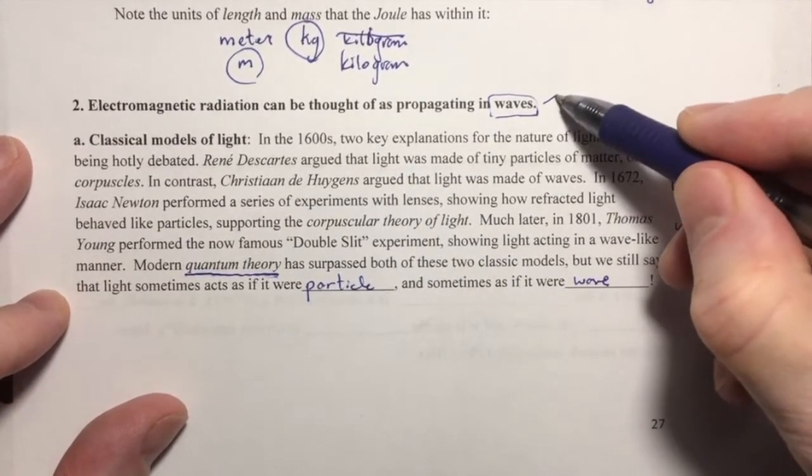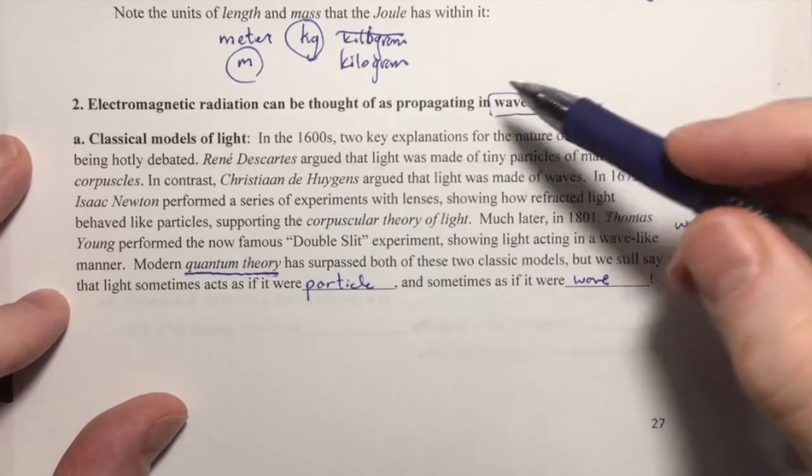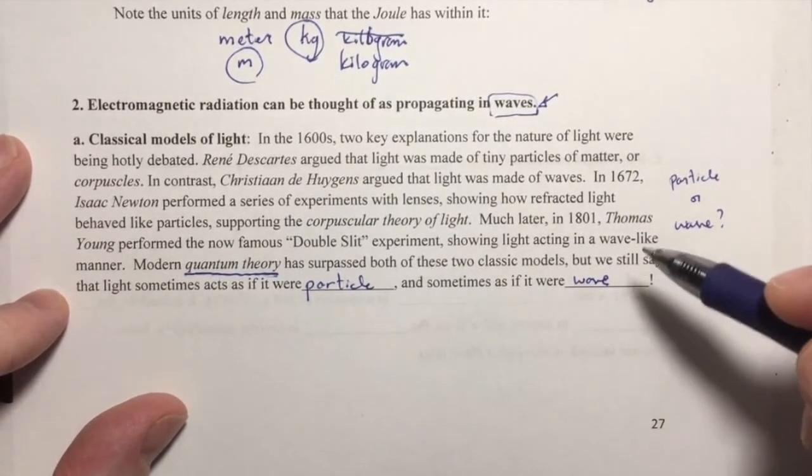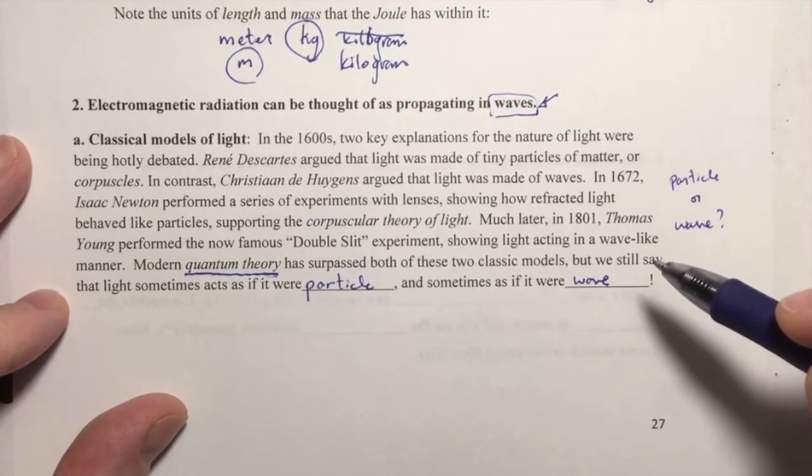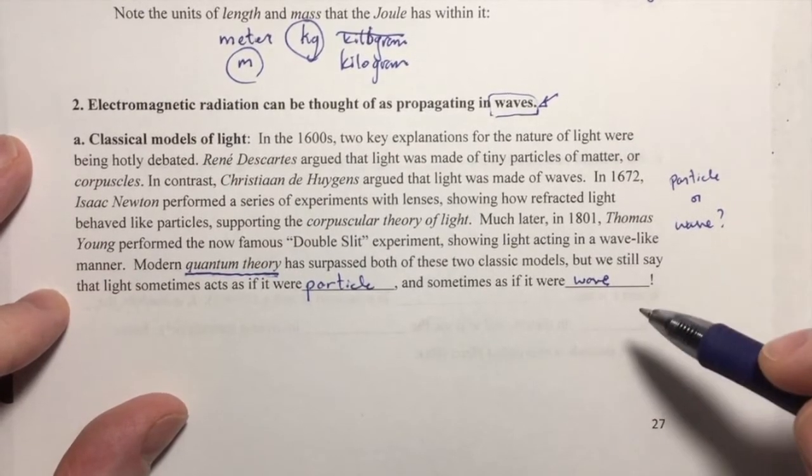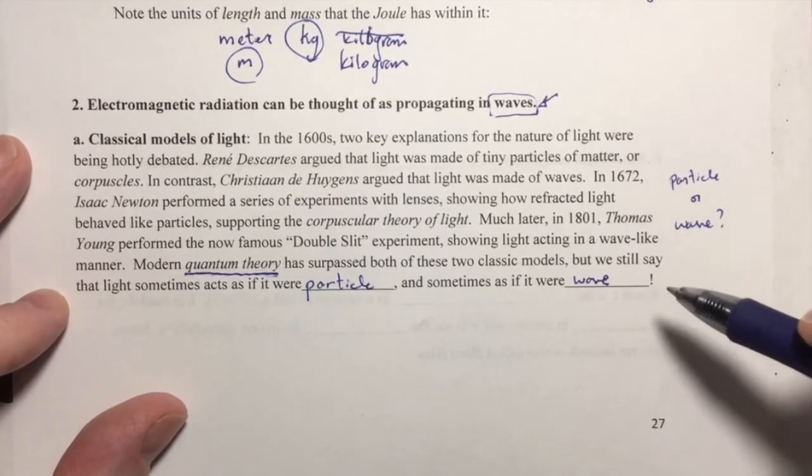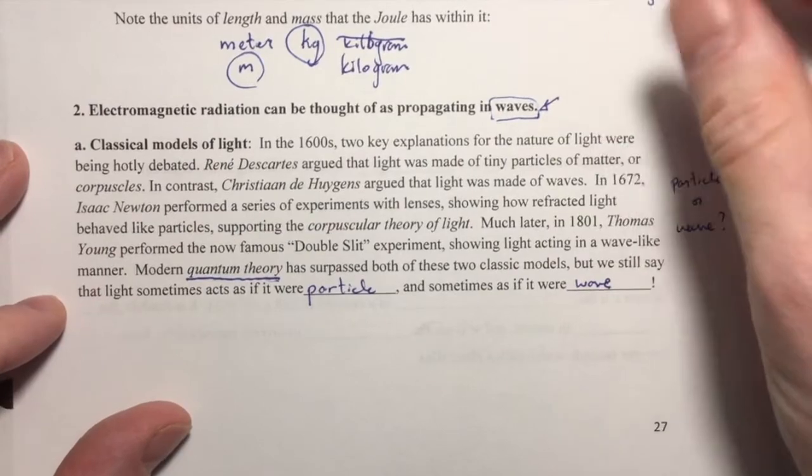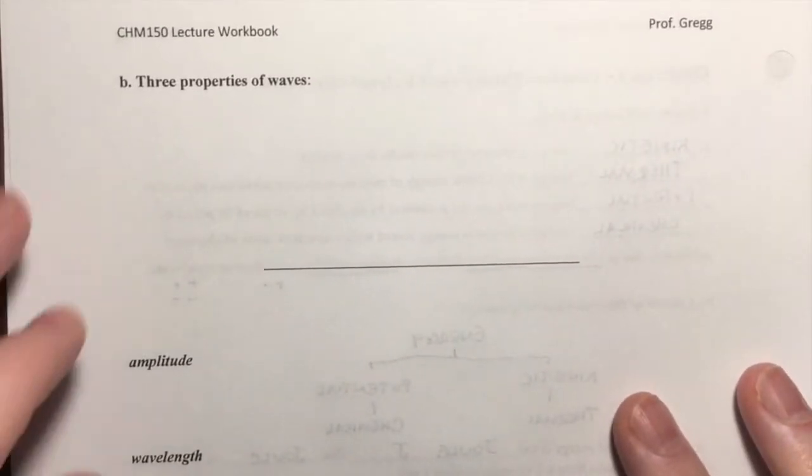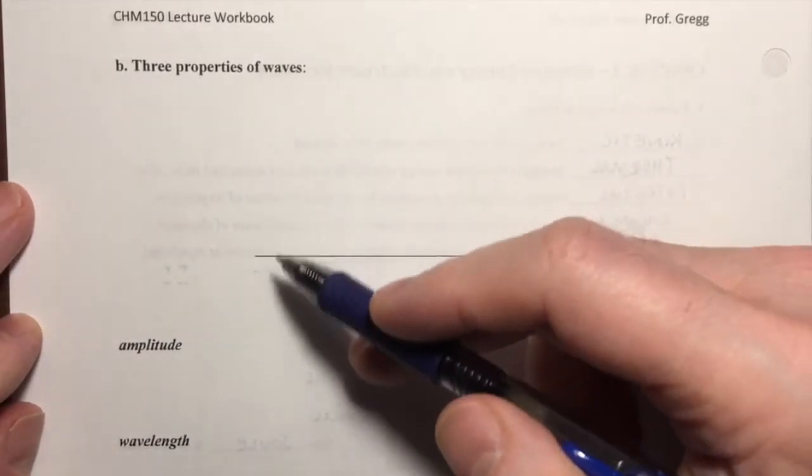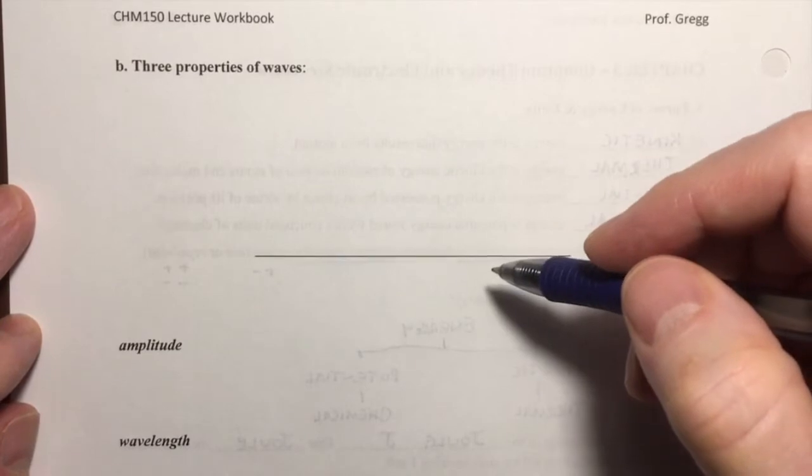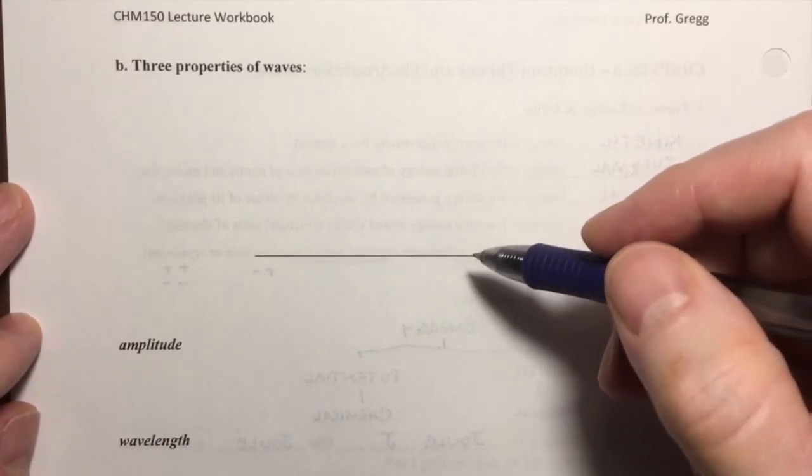Right now we're going to focus on electromagnetic radiation as a wave. So let's talk a little bit about waves and the properties of waves. And once we do that, then we'll be set up to actually do some mathematic calculations on electromagnetic radiation.